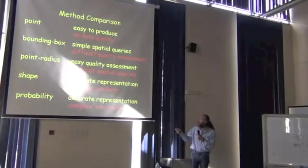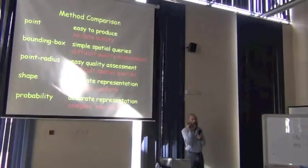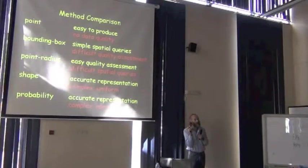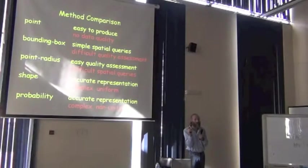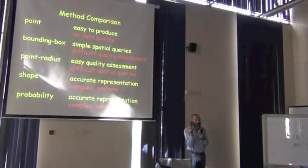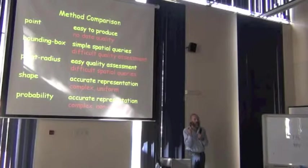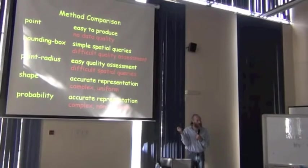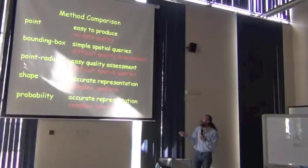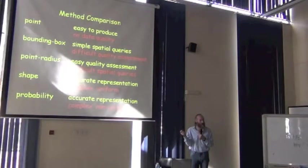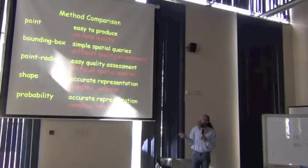The opposite, then, is true of the point-radius method. It's quite easy to assess the quality because it's already measured in meters. So a radius of 1,000 meters is much more specific than a radius of 10,000 meters. You already have a single attribute that we can query on to see how specific a georeference is using that measure. But it's a little bit harder, quite a bit harder actually, to know if you're inside the circle or not. So there are pluses and minuses behind both of these two methods.